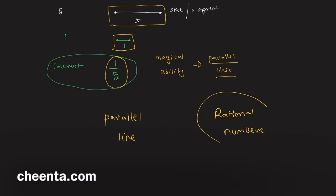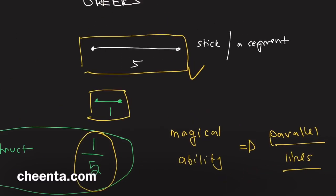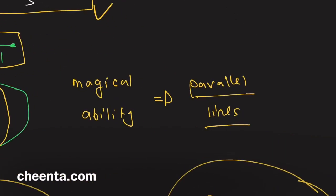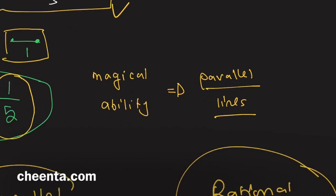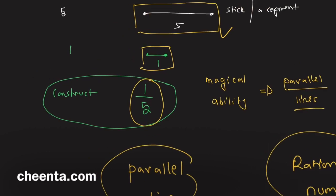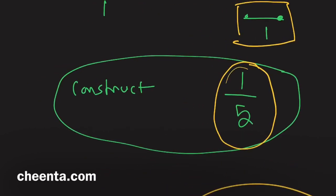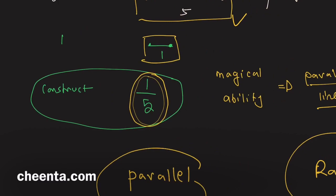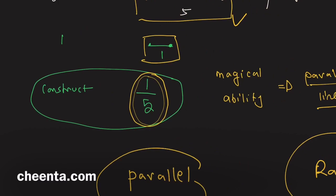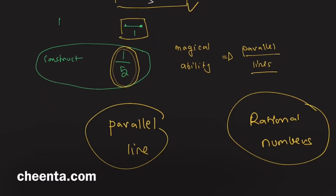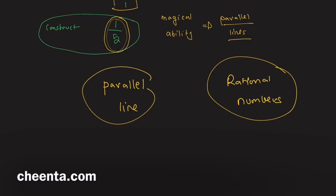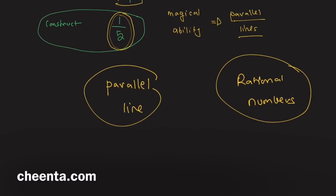How can you do it? You have this length of five, you have one, and you have this magical ability to draw parallel lines. How can you construct the length of one over five using these tools? You can pause the video here and give it a try on your own.